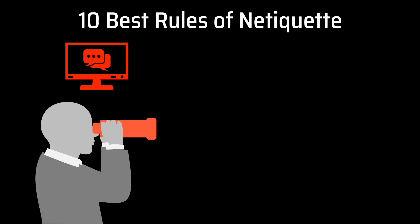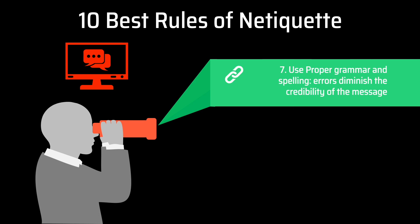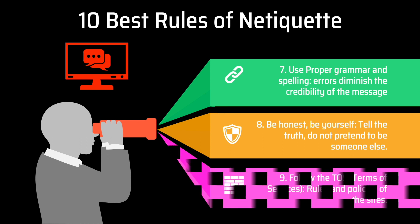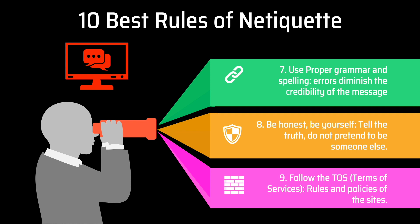Number seven, use proper grammar and spelling — errors diminish the credibility of the message. Number eight, be honest and be yourself. Tell the truth and do not pretend to be someone else. Number nine, follow the TOS, or terms of service — these refer to the rules and policies of the sites.